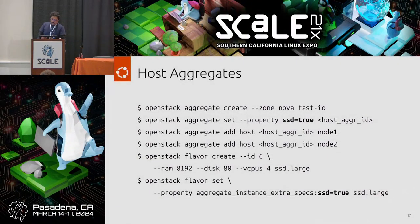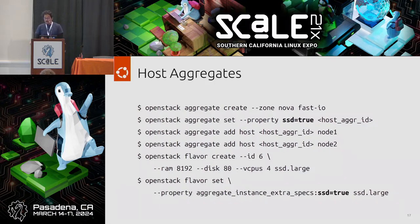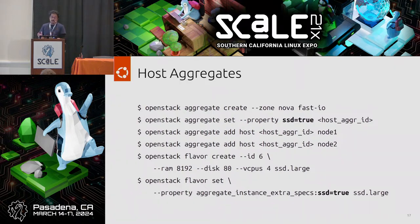One of the easiest things to set up is host aggregates. You may have a fleet of nodes and those nodes may have different properties. In this case, we are creating an aggregate specifically for nodes that have SSDs. We want to create a flavor — the flavor is what defines what characteristics your instances will have. You create the aggregate and set a property, in this case SSD equals true, and then you start adding all the different nodes that have this property. This is all on the administrator side.